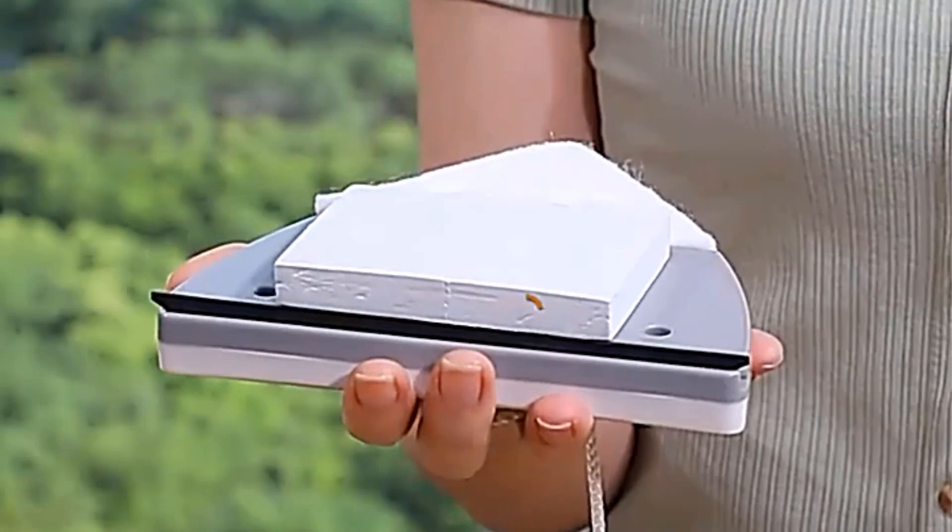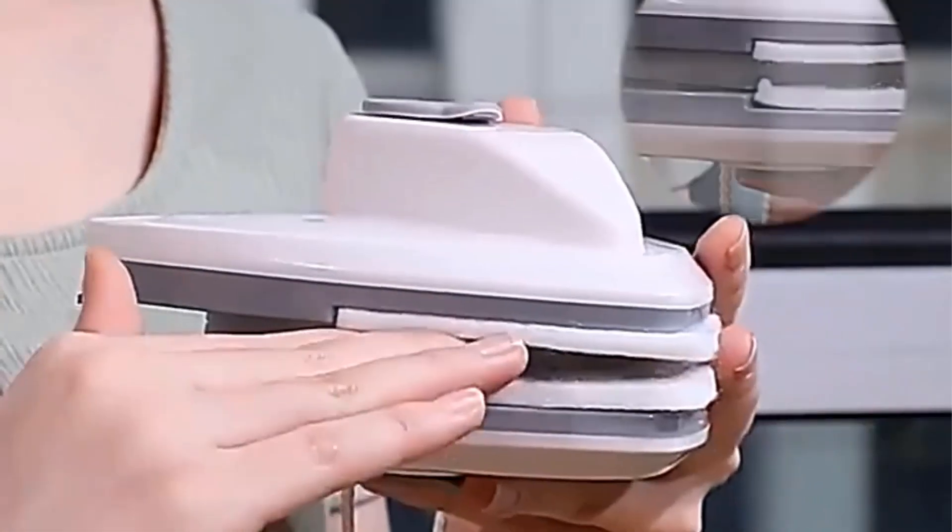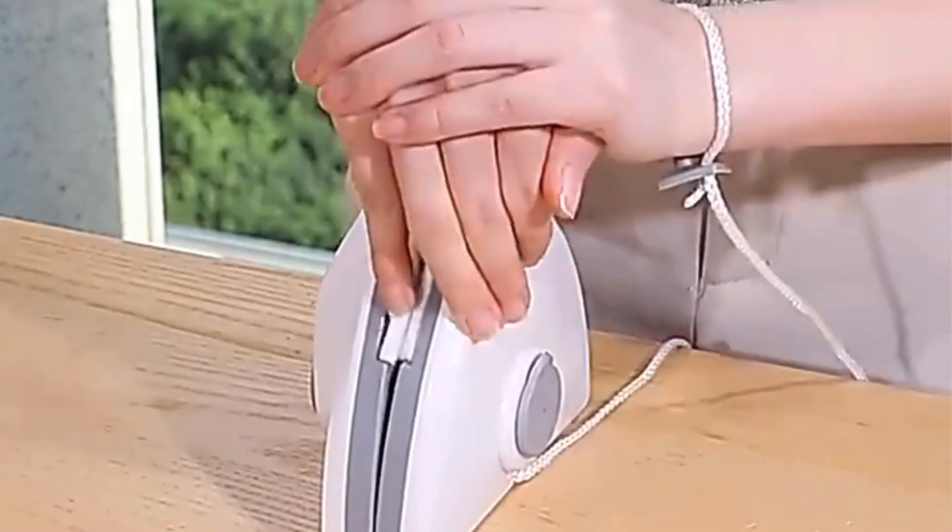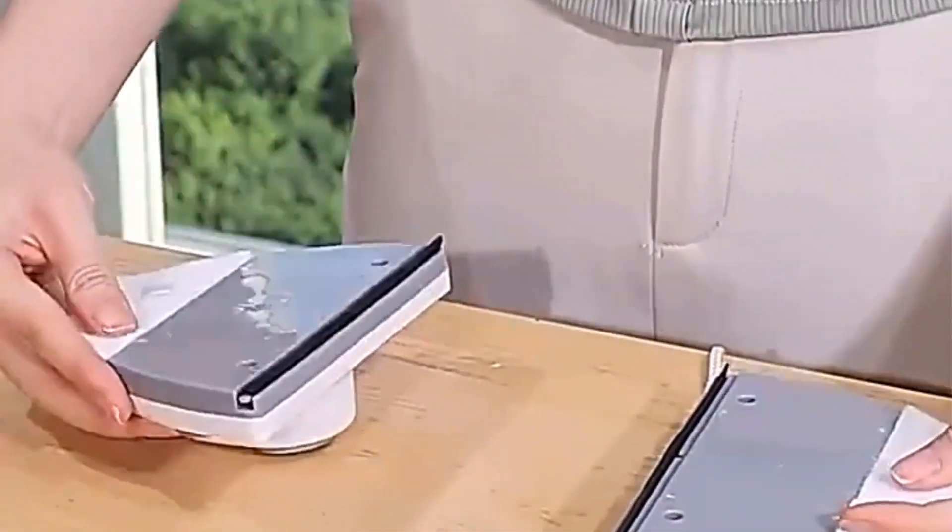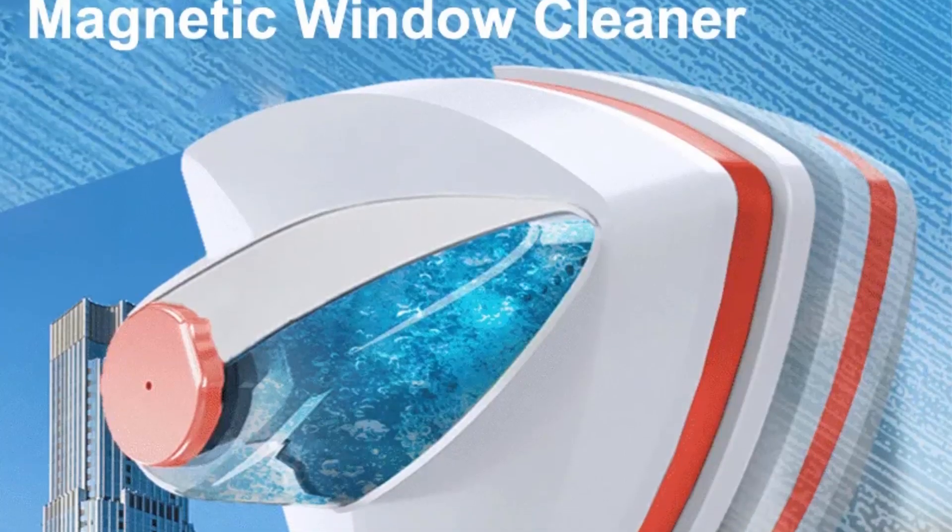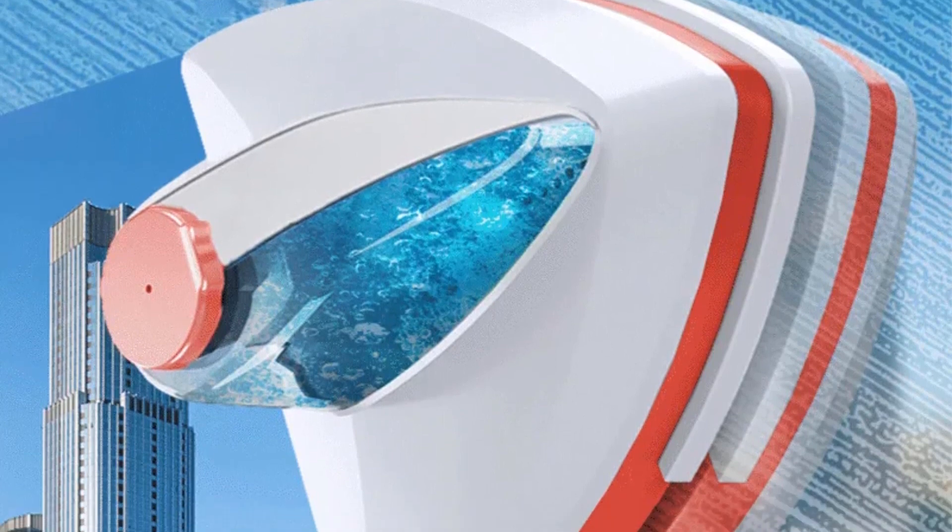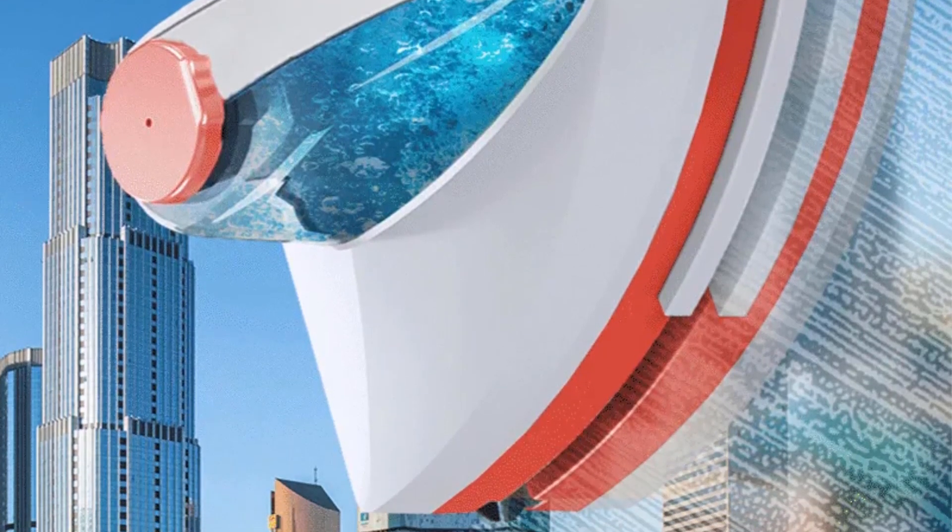The double-sided feature of the Magnetic Window Cleaner ensures efficiency by eliminating the need to manually flip the tool while cleaning. This not only saves time, but also provides a more convenient cleaning experience. The automatic water discharge system further adds to the convenience, allowing users to dispense water or cleaning solution as needed during the cleaning process.